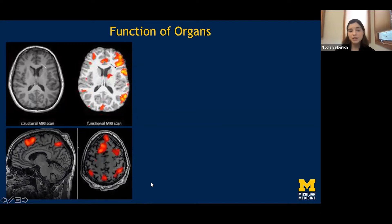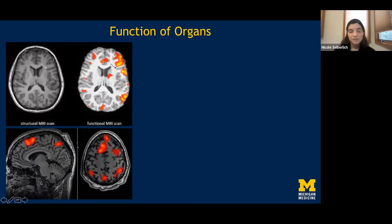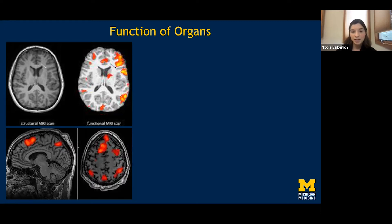There's a lot of work at the University of Michigan looking at organ function with MRI — not just structure, but how well organs are doing what they should. Functional MRI, or fMRI, exposes the subject to a stimulus — something they're looking at or hearing — and the MRI scan shows which parts of the brain are getting more blood and working harder. We take a regular structural scan and overlay the areas that show activation.